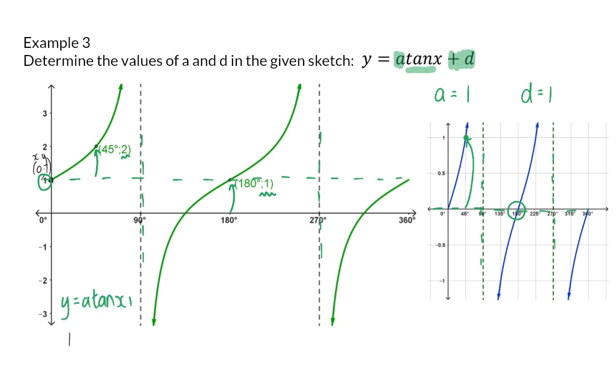So, if we change the y value to 1 and the x value to 0, you can use your calculator to determine tan of 0, which is 0. And this means that the whole term of a times tan of 0 will become 0. Therefore, if you solve for d, d is 1.